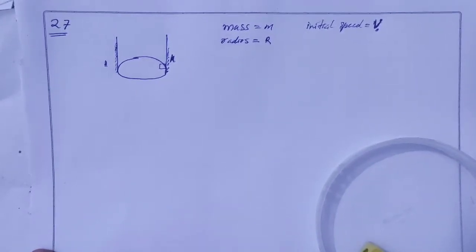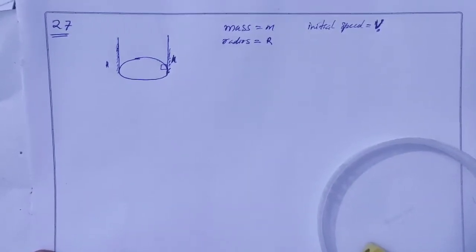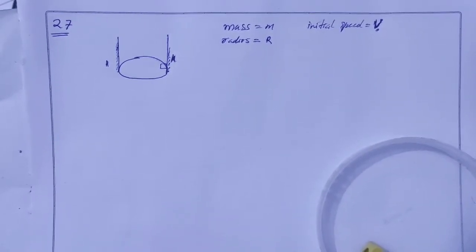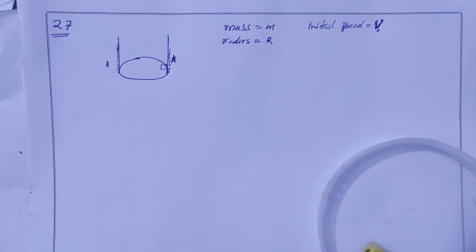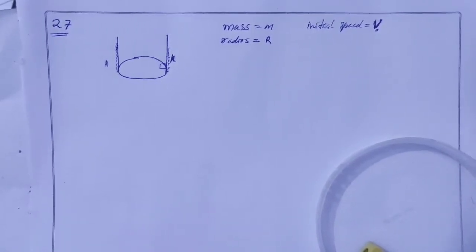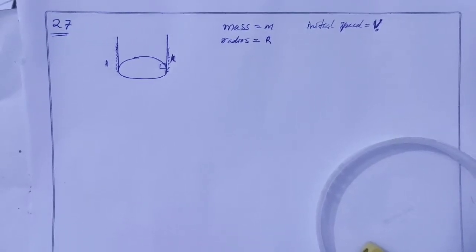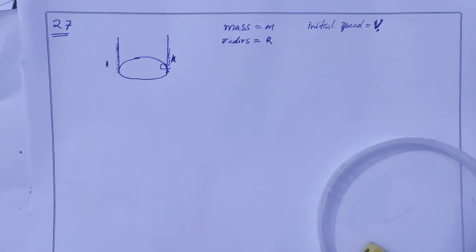Vuma Solution Chapter 7 Circular Motion Question 27. A block of mass m moves on a horizontal circular path against a wall of a cylindrical room of radius r. The floor of the room on which the block moves is smooth, but the friction coefficient between the wall and the block is mu. The block is given an initial speed v0.